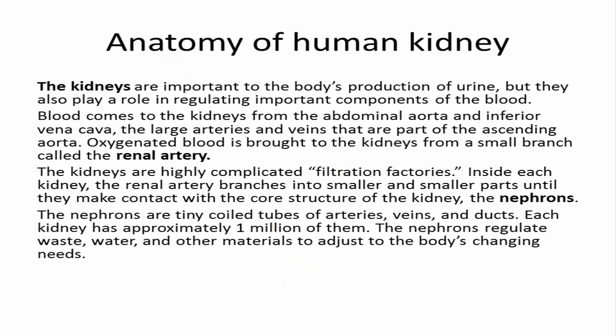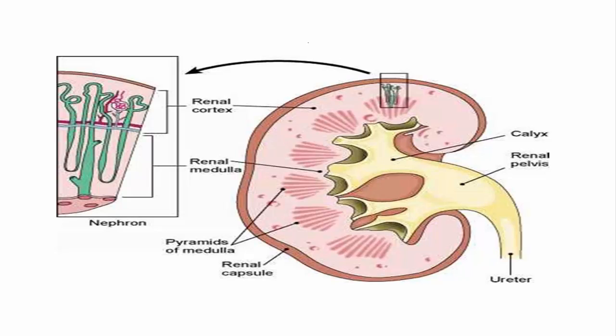The kidneys are highly complicated filtration factories. Inside each kidney, the renal artery branches into smaller and smaller parts until they make contact with the core structure of the kidney, the nephrons. The nephrons are tiny coiled tubes of arteries, veins, and ducts. Each kidney has approximately 1 million of them.